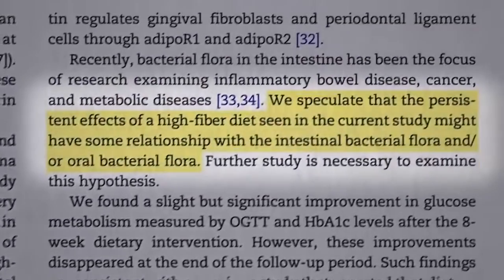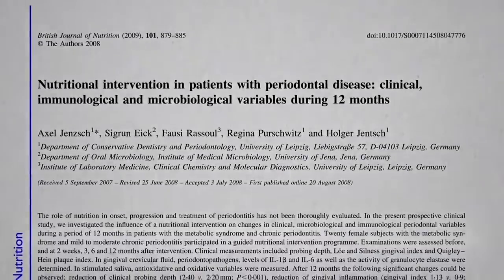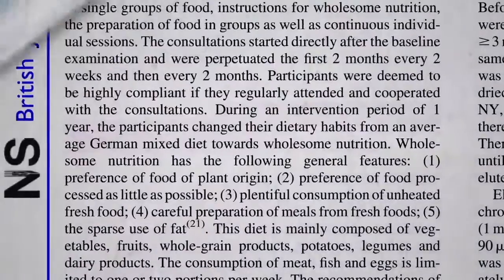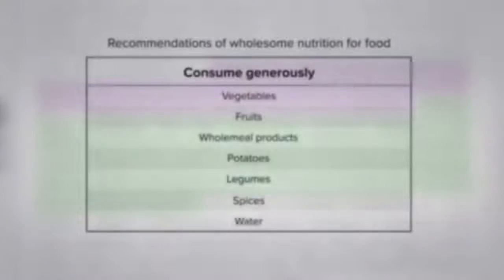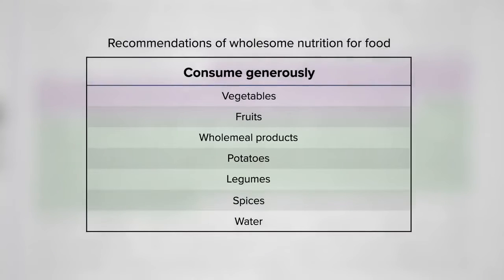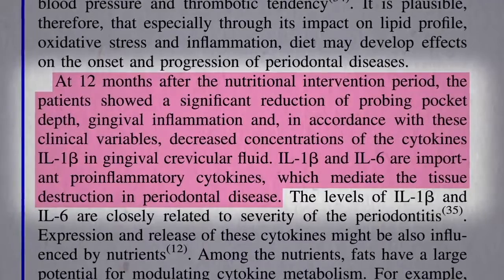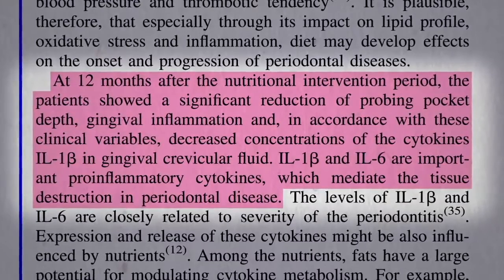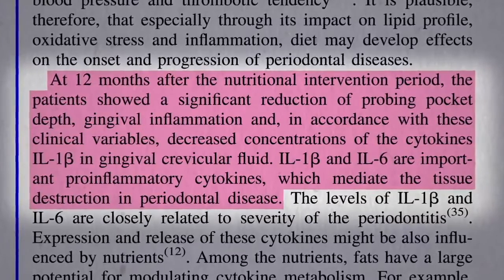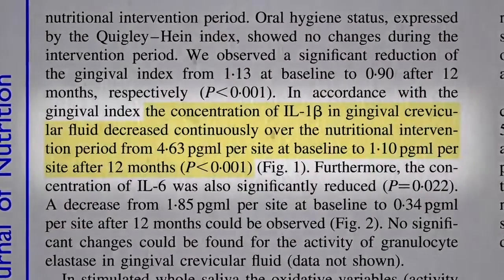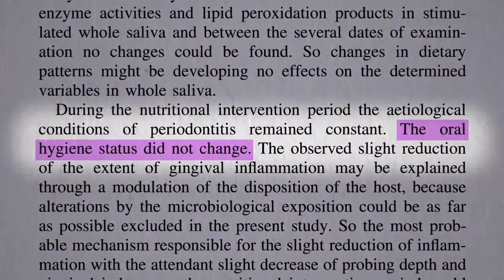They're thinking maybe the high-fiber diet altered their good gut flora, or maybe their oral flora. German researchers took 20 women with mild to moderate chronic periodontitis and for a year tried to transition their diets towards more wholesome nutrition — more plant foods, more whole foods, more fresh foods — centering their diets around vegetables and fruit, whole grains, potatoes, and legumes: beans, split peas, chickpeas, and lentils. After 12 months, the patients showed a significant reduction of probing pocket depth, gingival inflammation, and for the first time, decreased concentrations of inflammatory chemicals inside the crevice between the tooth and gums — thought responsible for the tissue destruction in periodontal disease — a decrease by as much as 75%. And all the while, their oral hygiene status didn't change, suggesting it was the diet that did it.